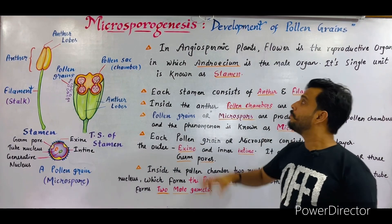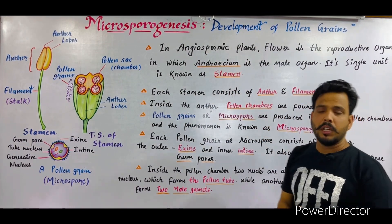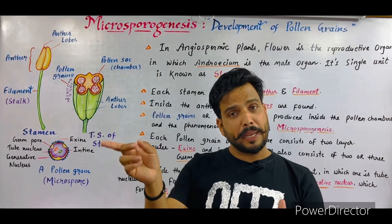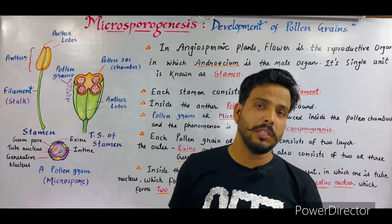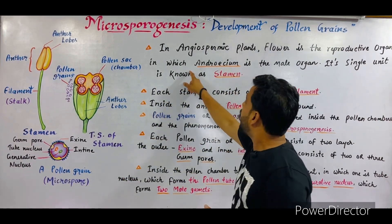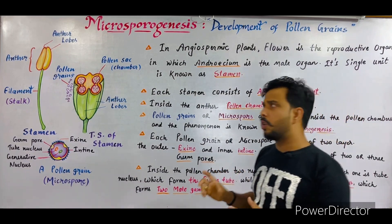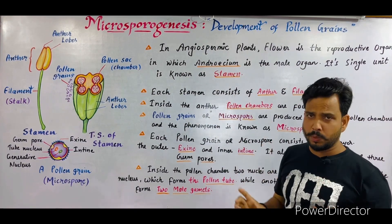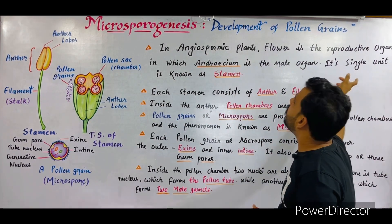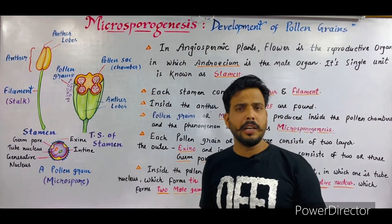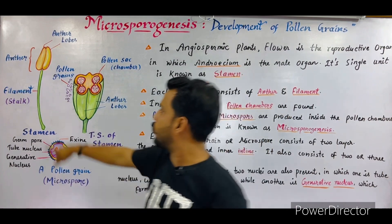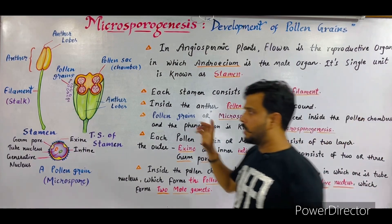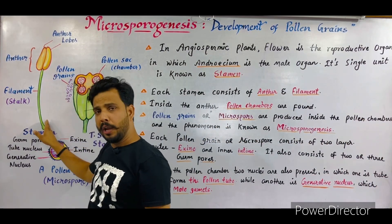For your notes: in angiospermic plants, the flower is the reproductive organ. Plants such as mustard and hibiscus consist of flowers with both male and female parts. Androecium is the male organ of the angiospermic plant, and its single unit is known as a stamen. Each stamen consists of an anther and a filament or stalk.